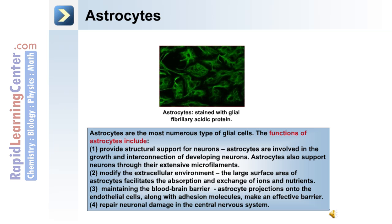They also support neurons through their extensive microfilaments. Number two is modifying the extracellular environment. The large surface area of astrocytes facilitates the absorption and exchange of ions and nutrients. Number three, maintaining the blood-brain barrier. Astrocyte projections onto the endothelial cells along with adhesion molecules make an effective barrier. And number four, repair neuronal damage in the central nervous system.